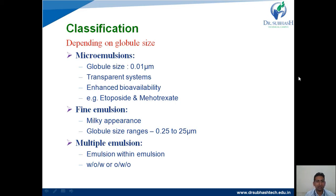The ideal examples of microemulsion are etoposide and methotrexate, which are available in the market. The second type is fine emulsion, which has a milky appearance. The globule size for fine emulsion ranges in between 0.25 to 25 micrometers.